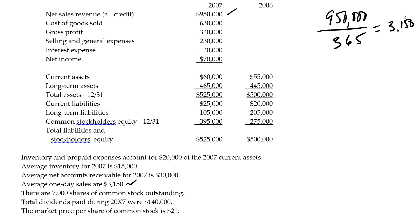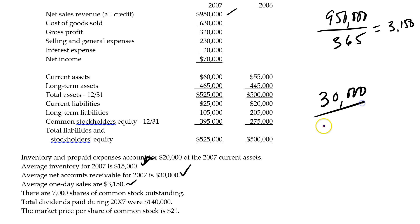Then what we want to do is divide our average accounts receivable by the one day's sales. How do we get average accounts receivable? We take beginning accounts receivable plus ending and divide it by two. Beginning and ending — 2006 is the beginning, 2007 is the ending. They just give it to us. So let's take 30,000 divided by 3,150 and we get something like 9.52 days.